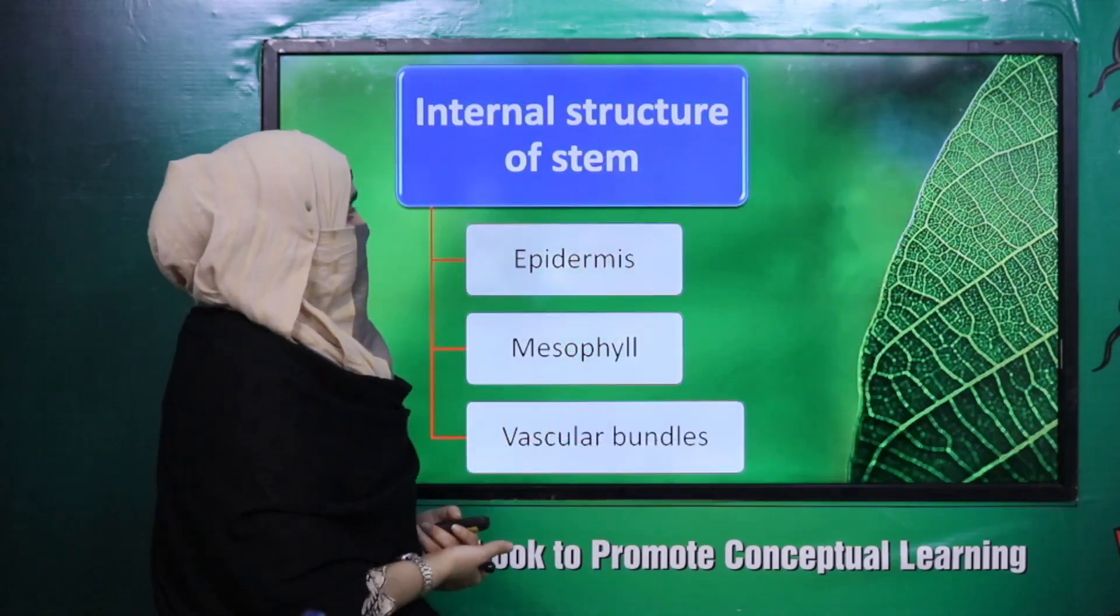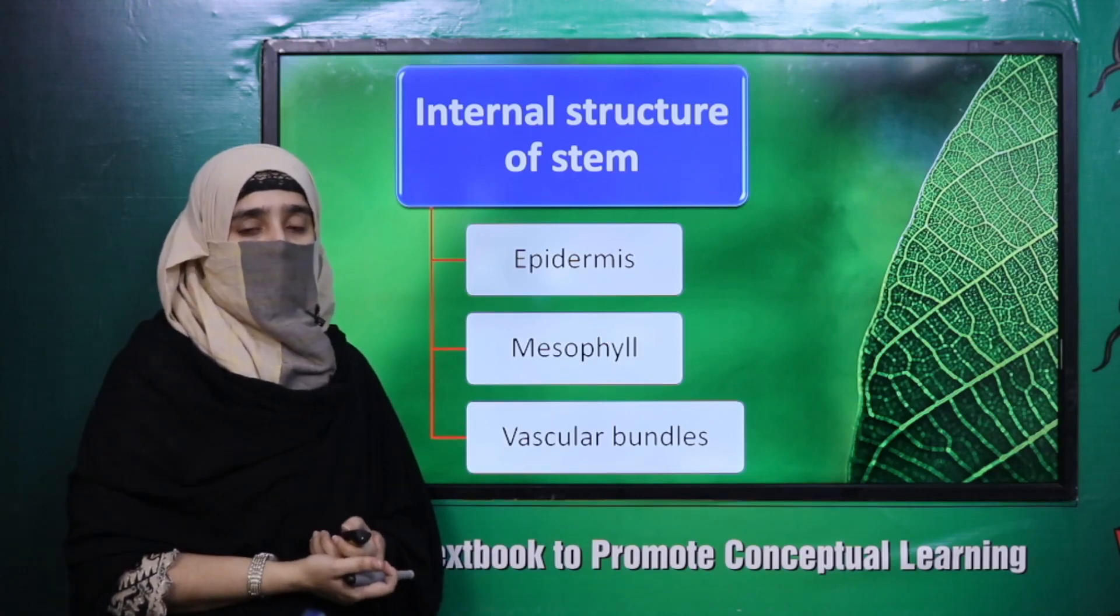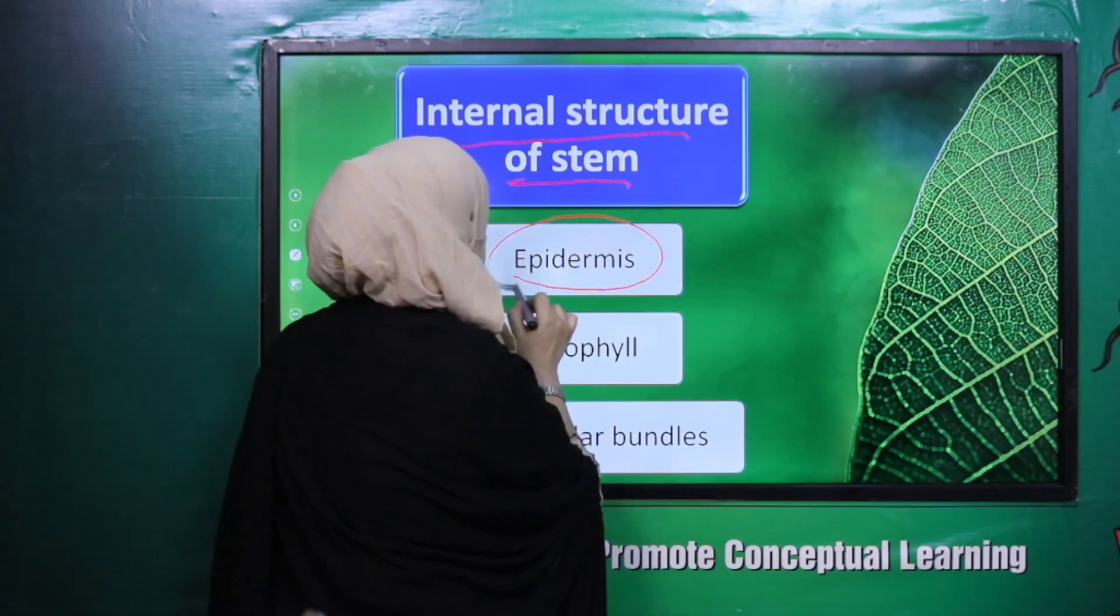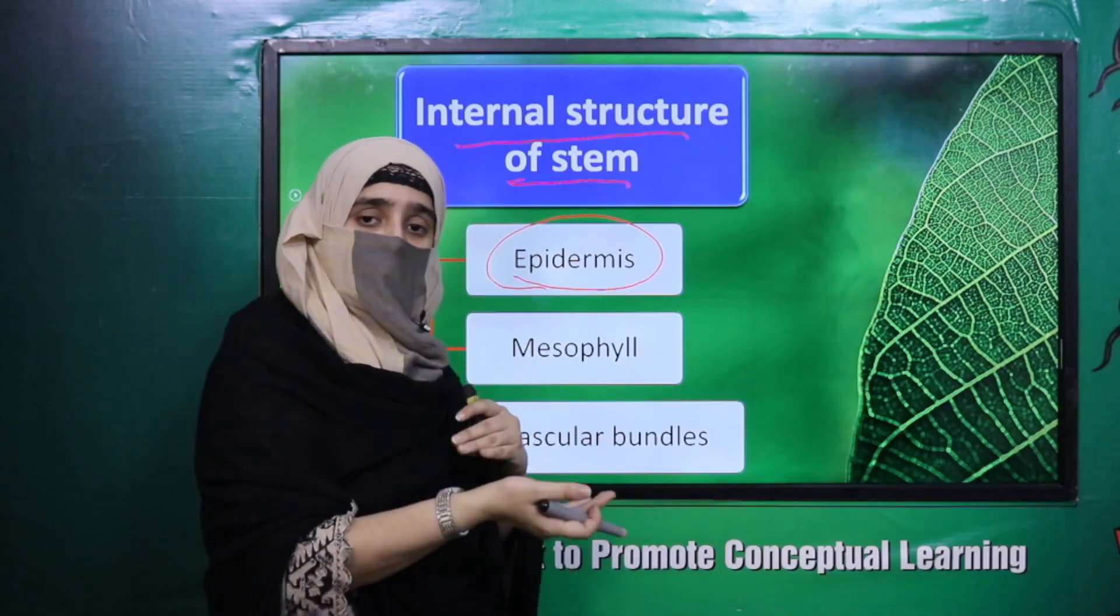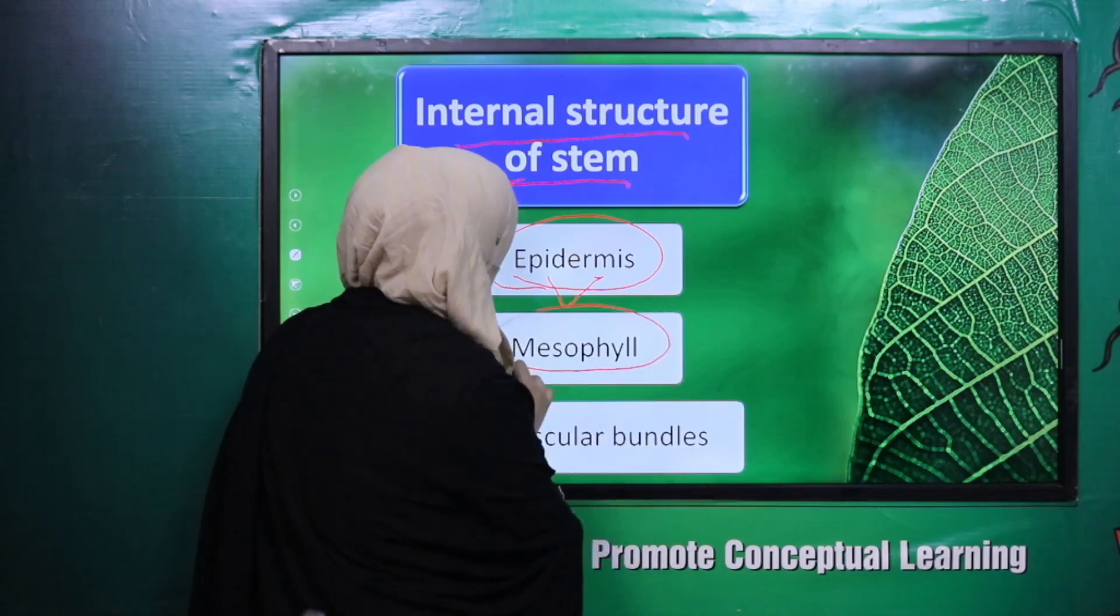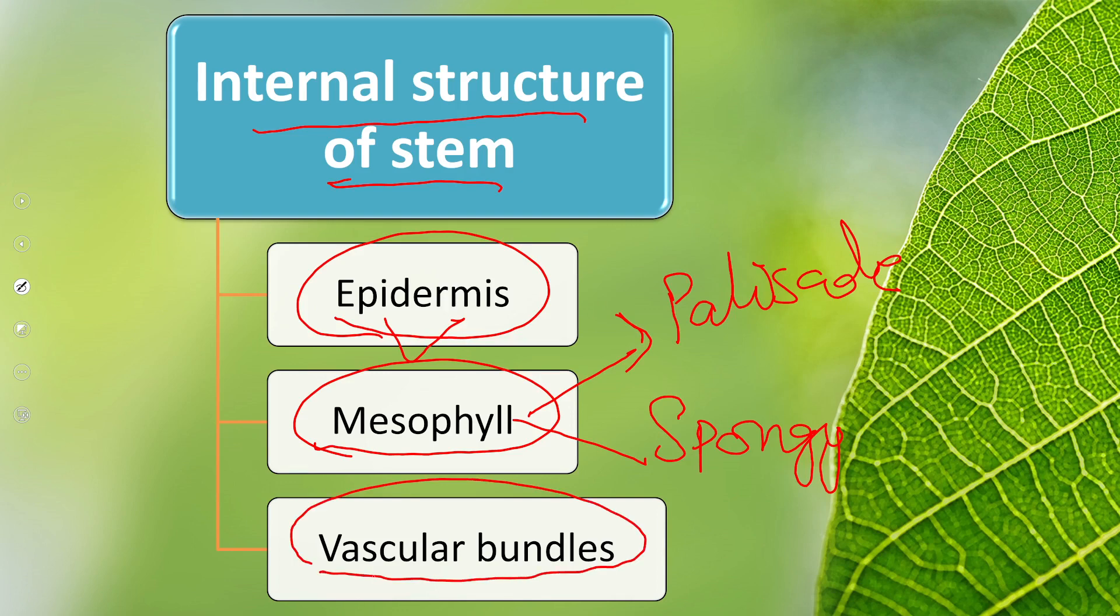Now let's see the internal structure of the leaf. The internal structure has the outer layer, the epidermis. The first one is palisade mesophyll. The second one is spongy mesophyll. Then the veins are the vascular bundles, that is xylem and phloem.